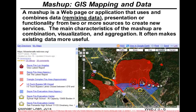The main characteristics of mashup are: combination — combining data from multiple sources; visualization — like using GIS to help visualize data better; and aggregation — aggregating data from multiple sources and presenting it in an easy-to-understand fashion.